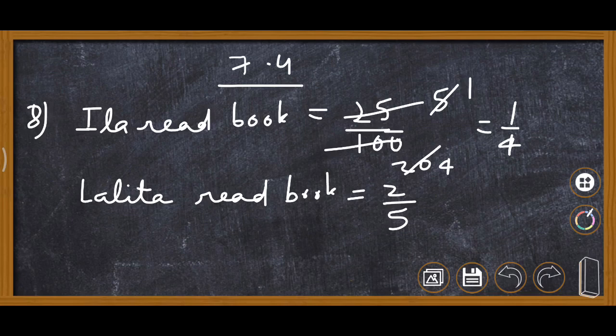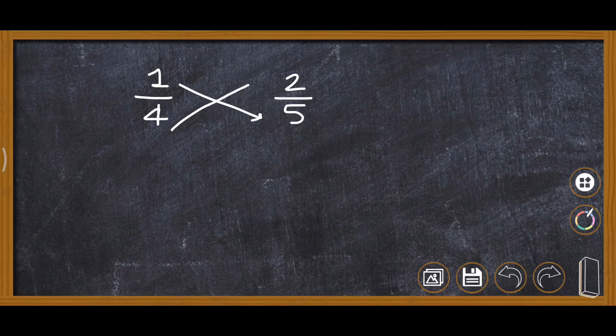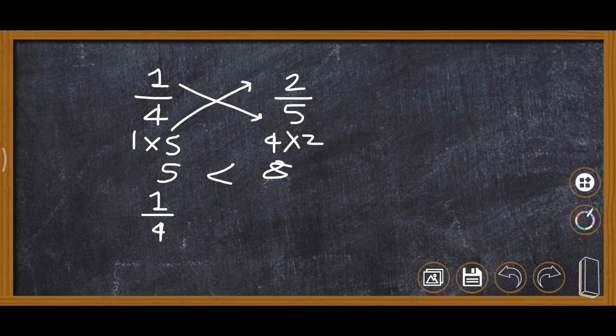We compare 1 upon 4 and 2 upon 5 by cross multiplication. 1 multiplied by 5 is 5, and 4 multiplied by 2 is 8. Here 8 is greater, which means 2 upon 5 is greater than 1 upon 4. Therefore Lalitha read more, and Illa read less.